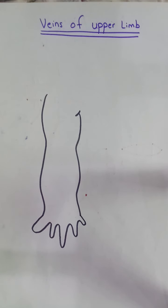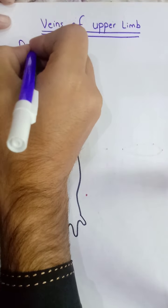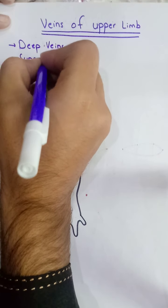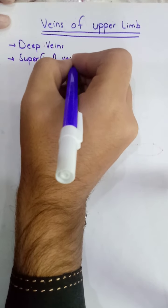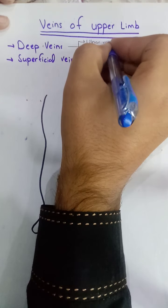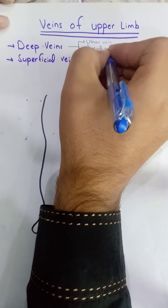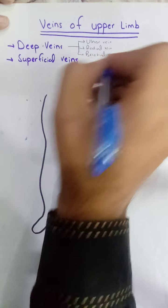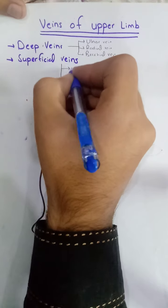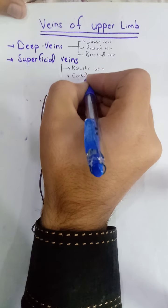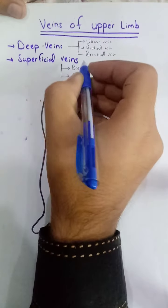Today we are going to discuss the veins of the upper limb. There are two types: the deep veins and the superficial veins. The deep veins include the ulnar vein, the radial vein, and the brachial vein. The superficial veins include the basilic vein, the cephalic vein, and the median antebrachial vein.